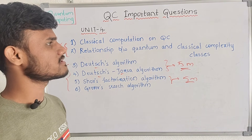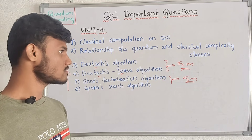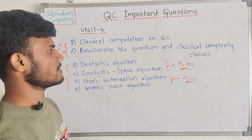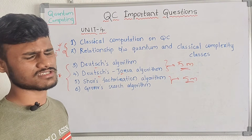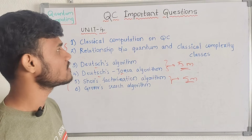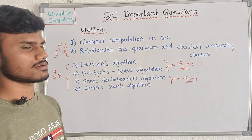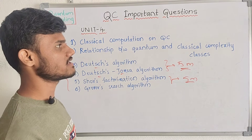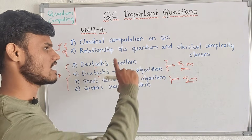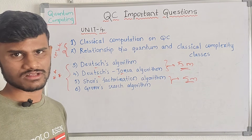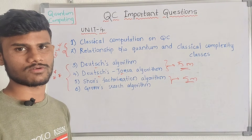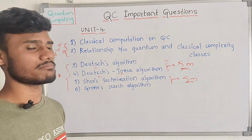If you get these four algorithms perfect, you will get the answer to this unit. These are both important — you will have easy questions. The normal relation between quantum and classical complexity, classical complexity classes — if you have a relation, you can explain it normally. Next, classical computing versus quantum computing — if you have a classical computation concept, you can explain it in quantum computing terms. If you mix these four questions, you will definitely get 10 marks. This is completely the fourth unit.